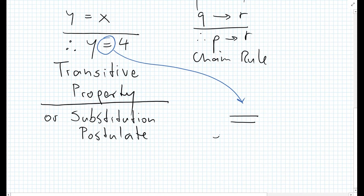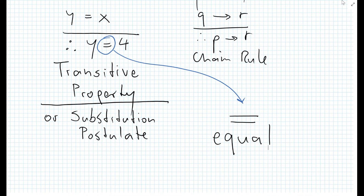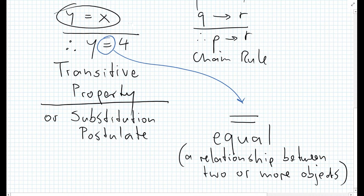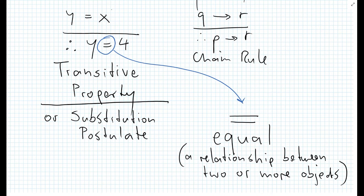Well, as we all know, this sign means equal. With this sign, we're actually comparing two different objects — it's kind of like a relationship between two objects. We can say equal is a relationship between two or more objects. Here we're comparing Y with X, or comparing Y with 4, and we're saying they're equal because we are having a relationship here.